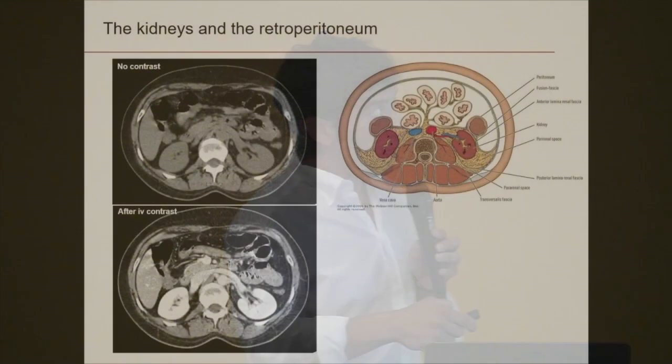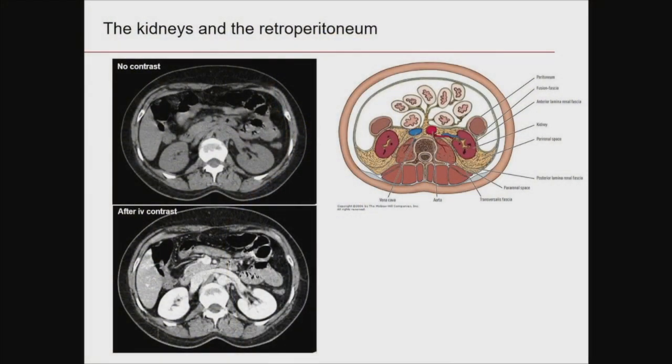Here's an example — this is a CT scan of the abdomen. This is the spine, this is the anterior part, these are the kidneys, here you can see the renal vessels. This is without contrast medium, and this is with contrast medium. You can see that this is a normal scan.